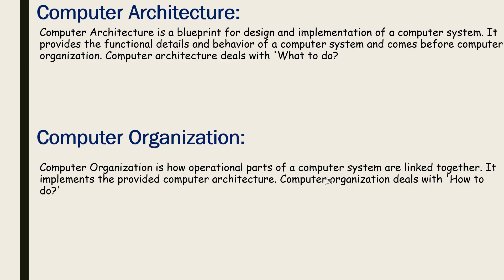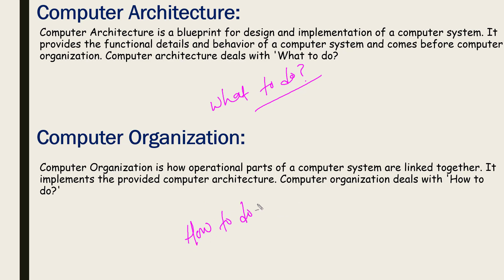Computer architecture is the functional part of the computer. Computer architecture is the blueprint for the design and implementation of a computer system. It provides the functional detail and behavior of the computer system and comes before computer organization.